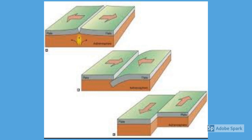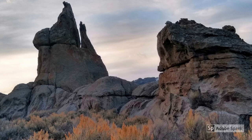Convergent boundaries form when two plates converge or collide — one plate slips below another, and the extreme pressure, when released, thrusts the land upward, forming high mountain ranges. Examples include the Alps and the Himalayas. If a convergent boundary involves a denser oceanic plate and a less dense continental plate, the denser plate slides beneath the continent in a process called subduction. Sometimes two plates slide past each other laterally, forming a transform plate boundary — an example being the San Andreas Fault.